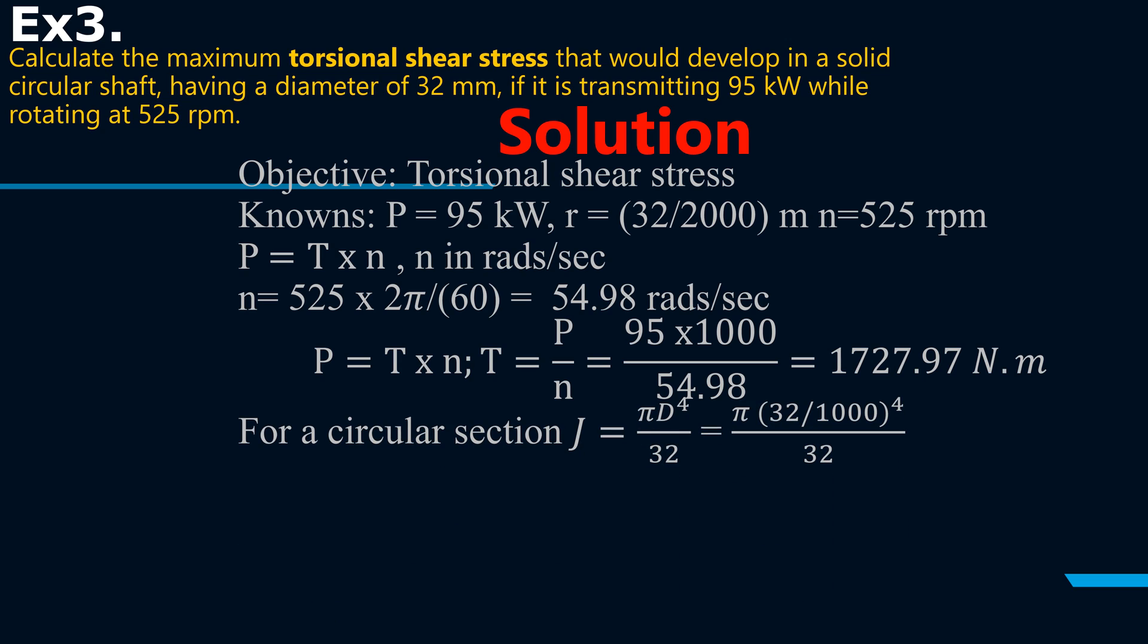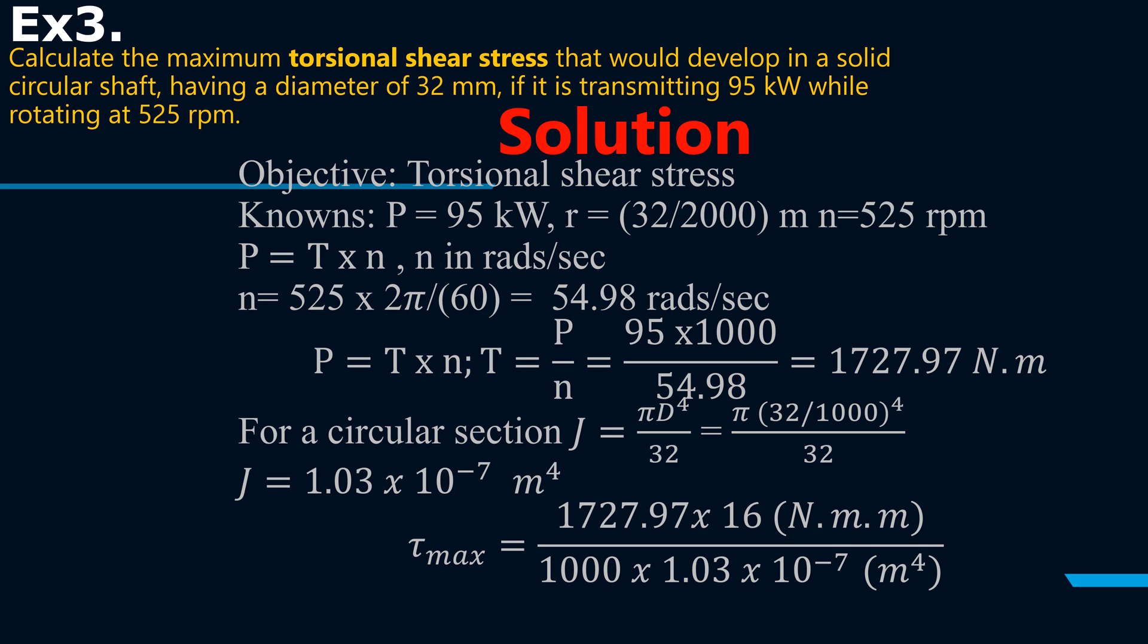Then for a circular section we know J is pi times d to the power 4 divided by 32. d here is 32 millimeters. It's important to work in SI units I've said before, so we're dividing this by a thousand to make sure we are working with standard units. Please note this is not a hollow section. If it was a hollow section we would modify this formula by subtracting the inner diameter. J comes to 1.03 times 10 to the minus 7 meters to the power 4. We substitute in the formula for tau max, which is T times r divided by J, and finally find the tau max as 268.57 MPa.